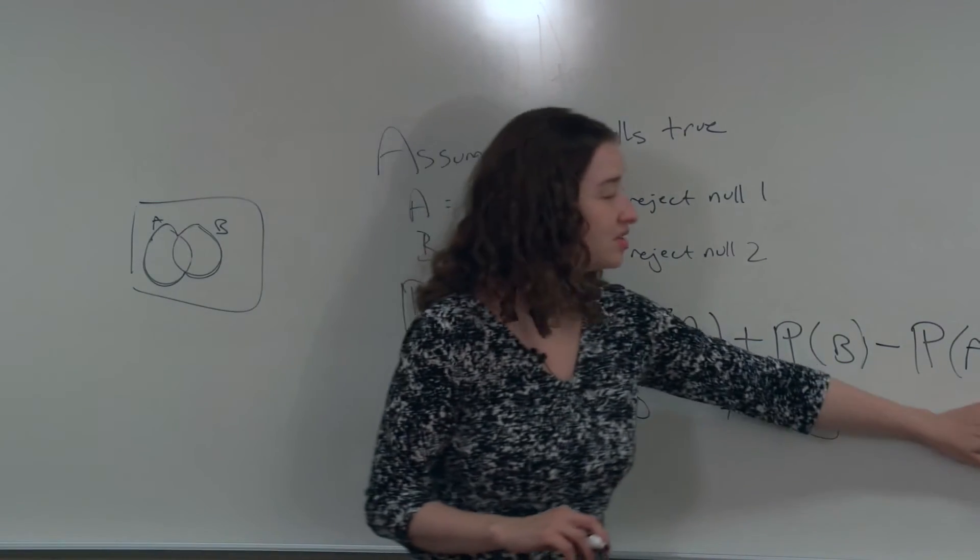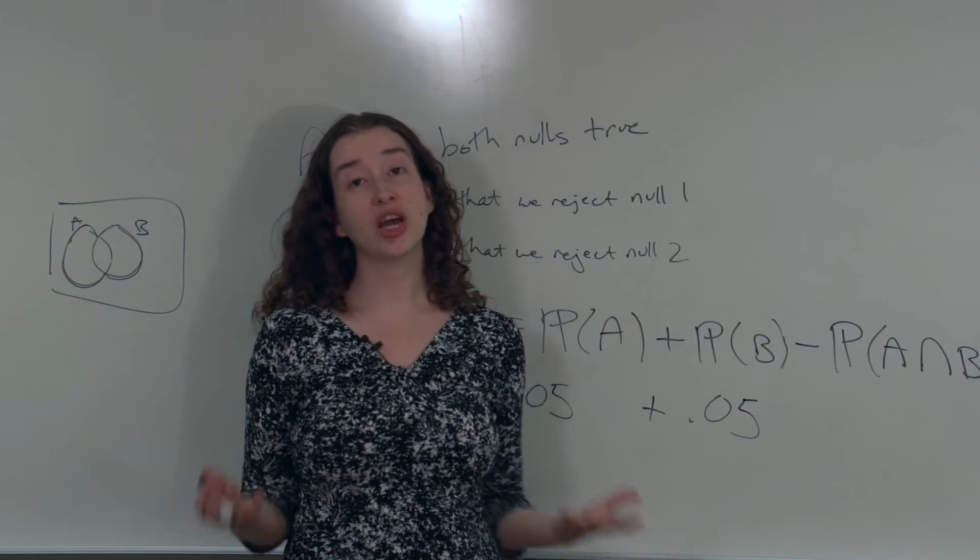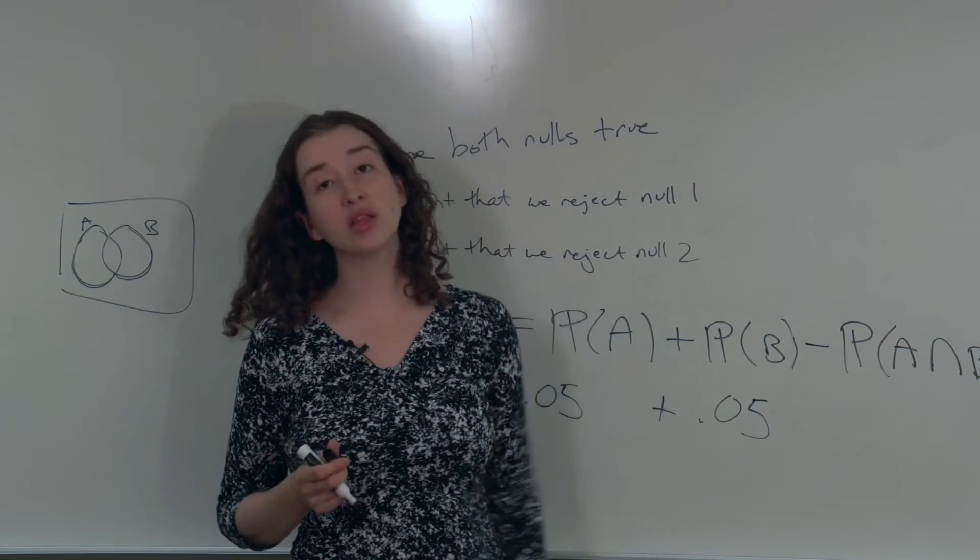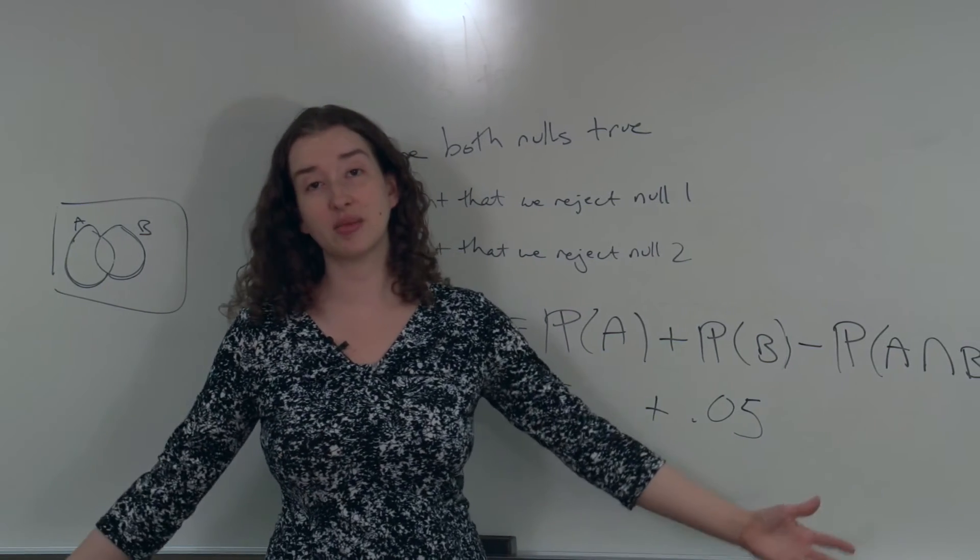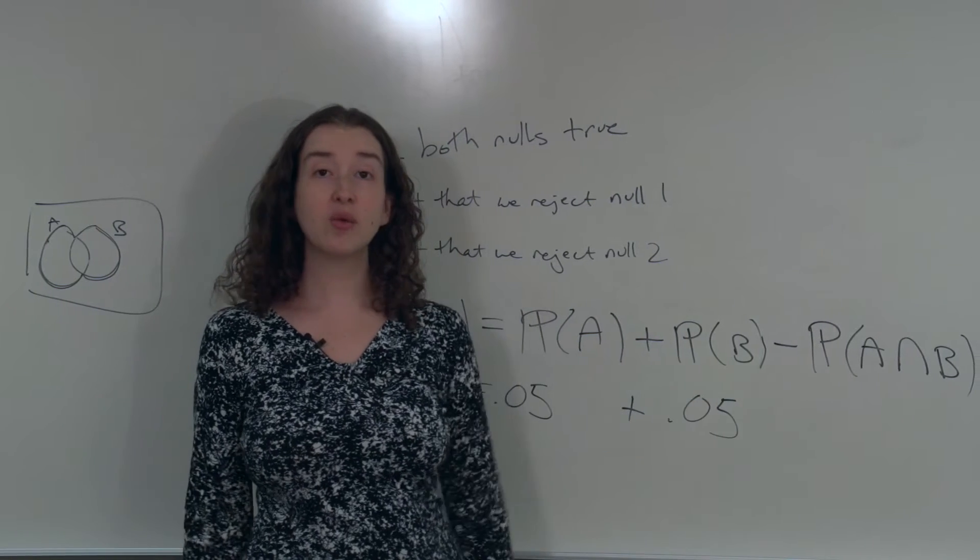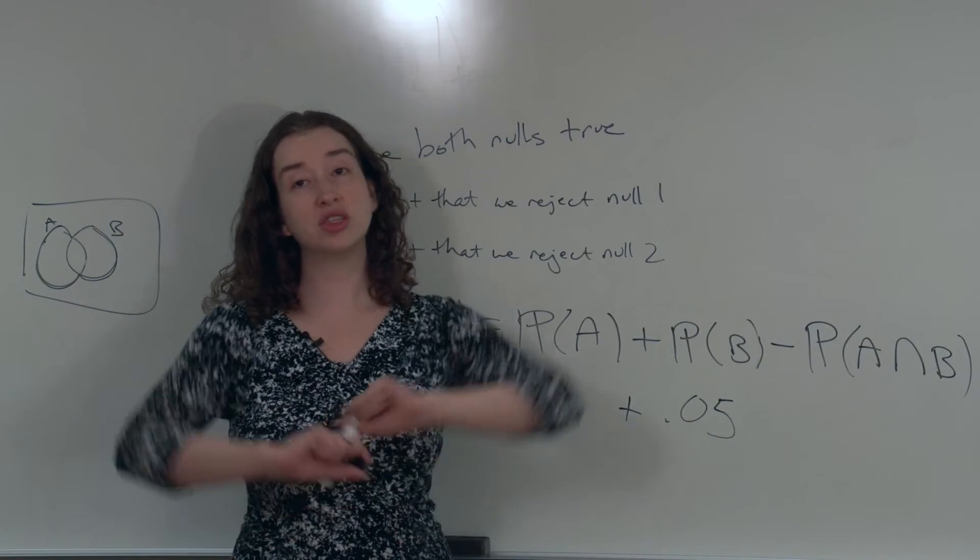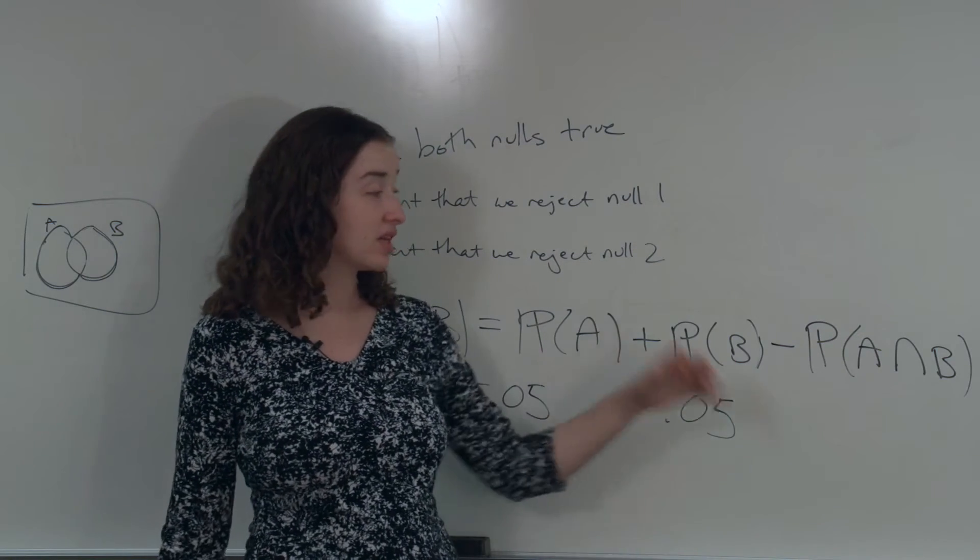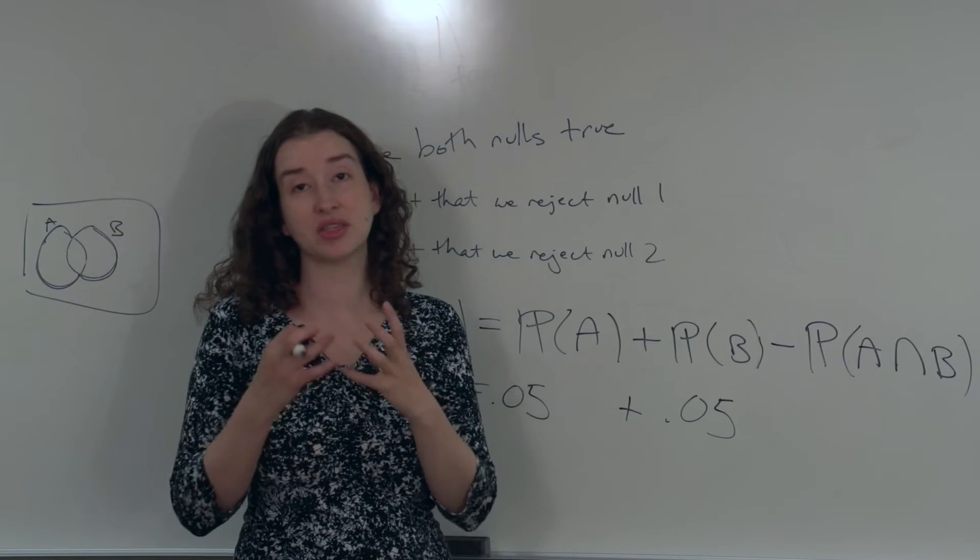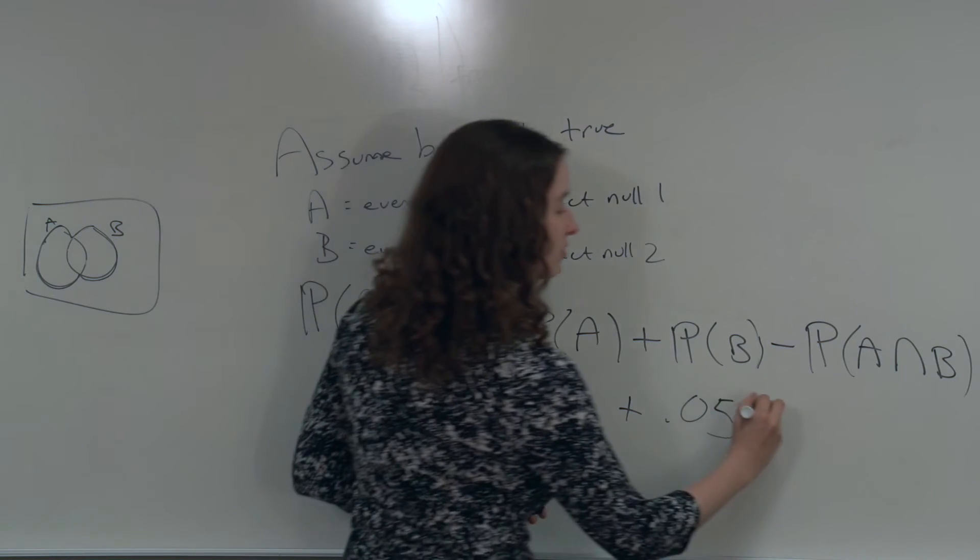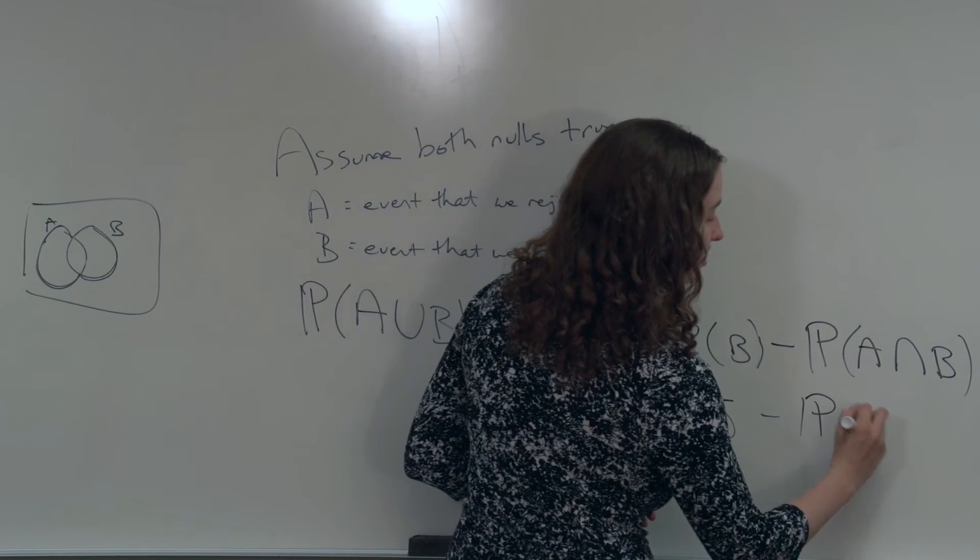What is this equal to? The probability that we reject both nulls even though both nulls are true? That depends on the correlation between the tests and I haven't said anything about that. I don't know what this quantity is here. I don't know whether test 1 and test 2 are different tests conducted by different researchers in different contexts, or whether these two tests are highly correlated to each other because they're about the same data just measured in a slightly different way. So I don't know what this quantity is. I haven't given enough information.